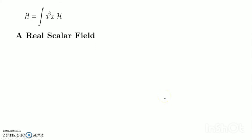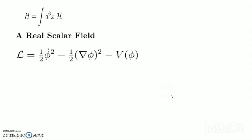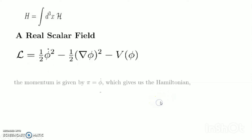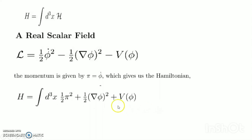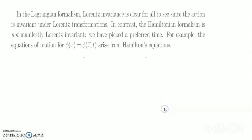Example: a real scalar field. L equals one-half phi-dot^2 minus one-half (del phi)^2 minus V(phi). The momentum is pi equals phi-dot, which gives the Hamiltonian H equals integral d^3x [one-half pi^2 + one-half (del phi)^2 + V(phi)]. Notice that the Hamiltonian agrees with the definition of total energy.